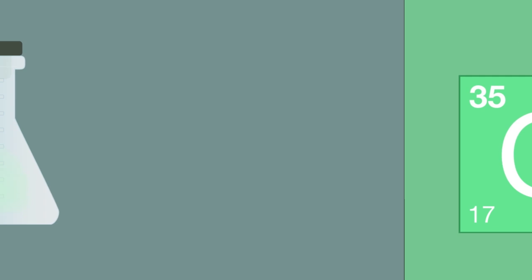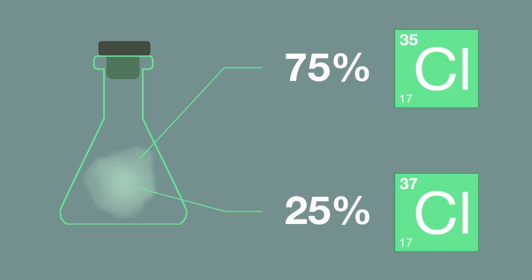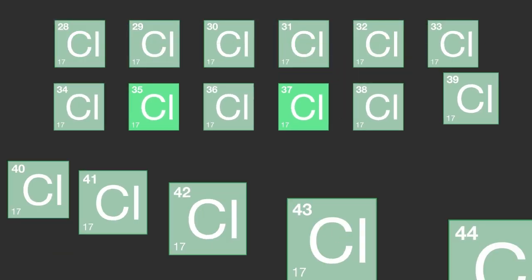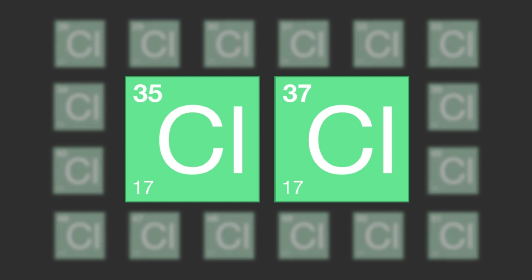If we took a sample of chlorine gas, we would find that it was made up of approximately 75% chlorine-35 and 25% chlorine-37. There are other isotopes of chlorine, but these two are the most common.